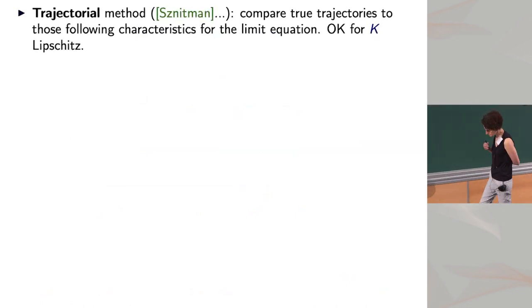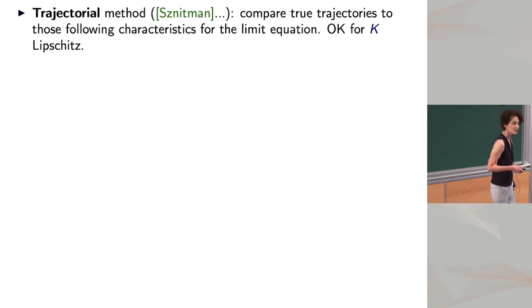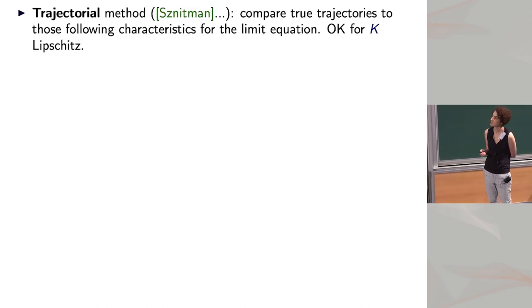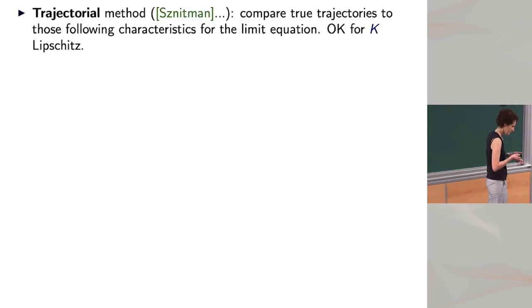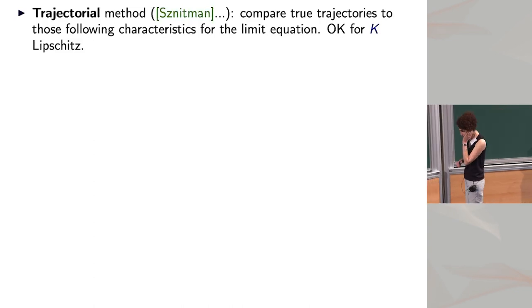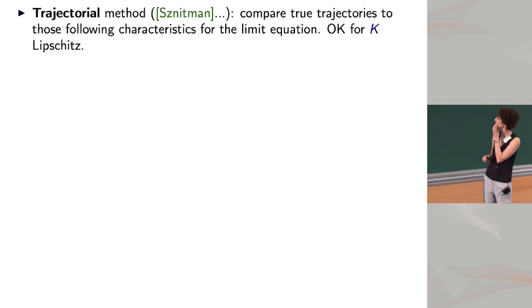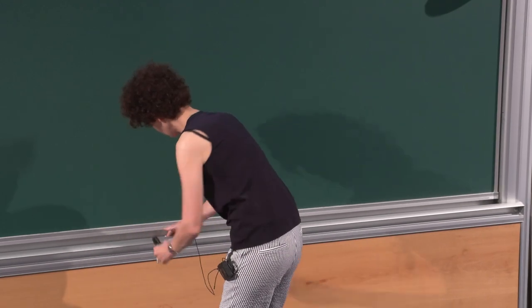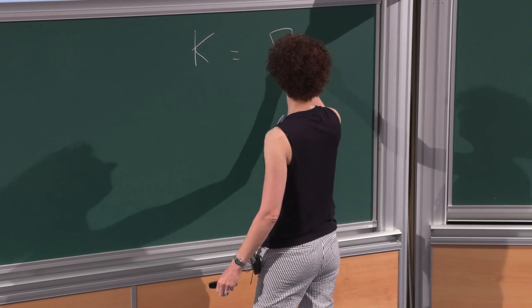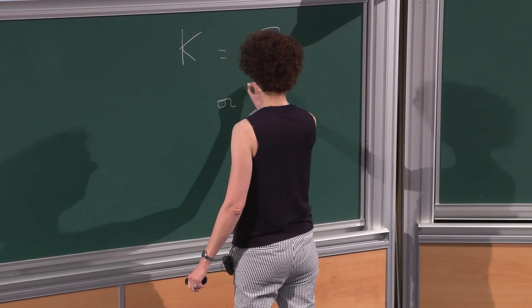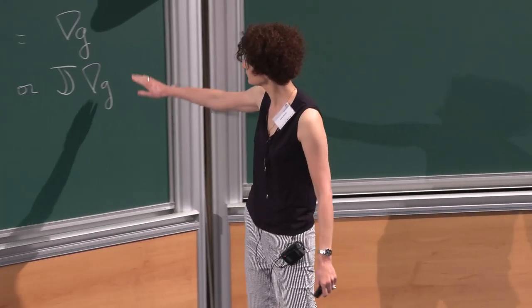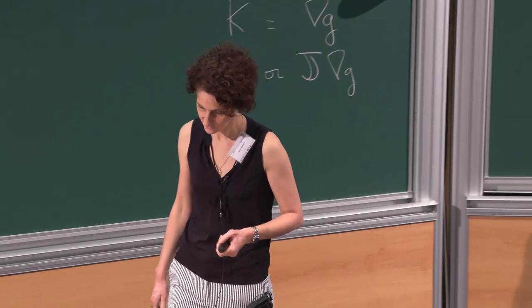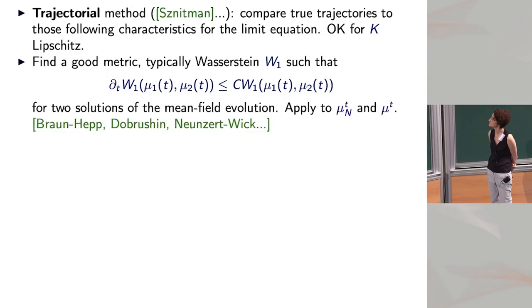How can we prove convergence to this limiting PDE? There are a number of methods. The earliest is the trajectory method: you compare particle trajectories to the characteristics of the limit equation and show that if they start close, they remain close. That method works when K is Lipschitz. But we are talking about very singular interactions, so this method will not work.